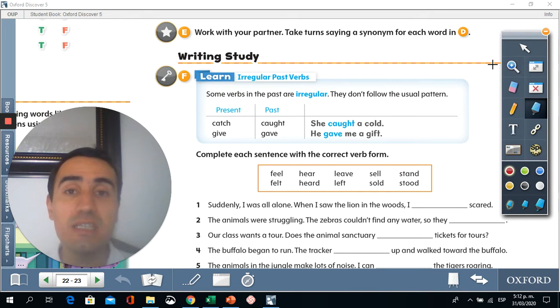Usually, easy verbs or regular verbs like play, you only add E and D and it says played. But in the case of irregular past verbs, it's different.